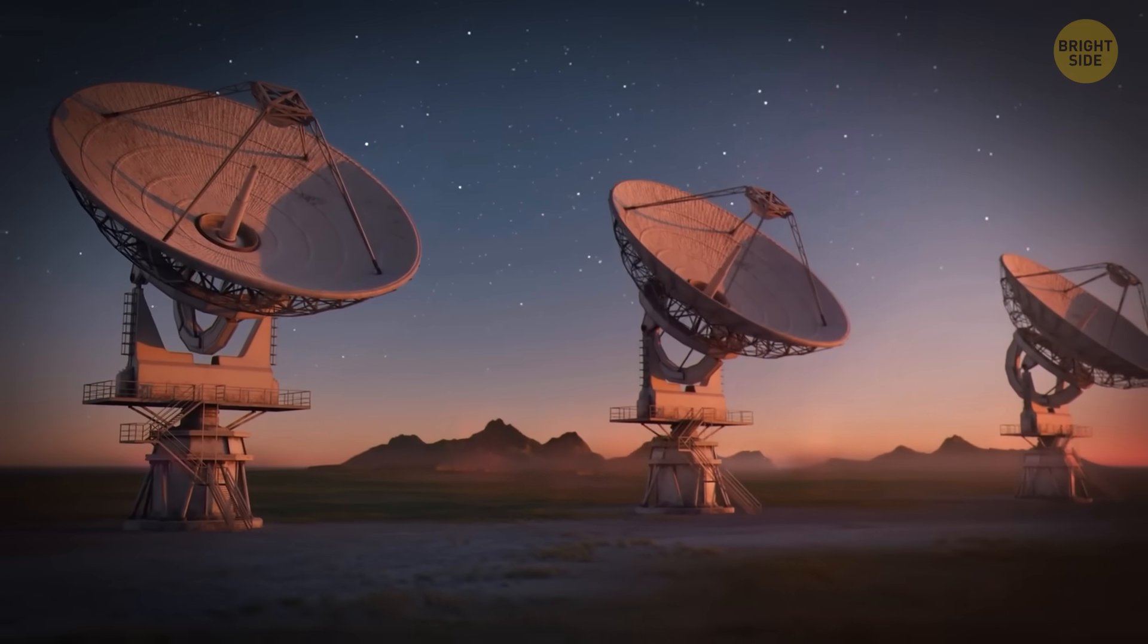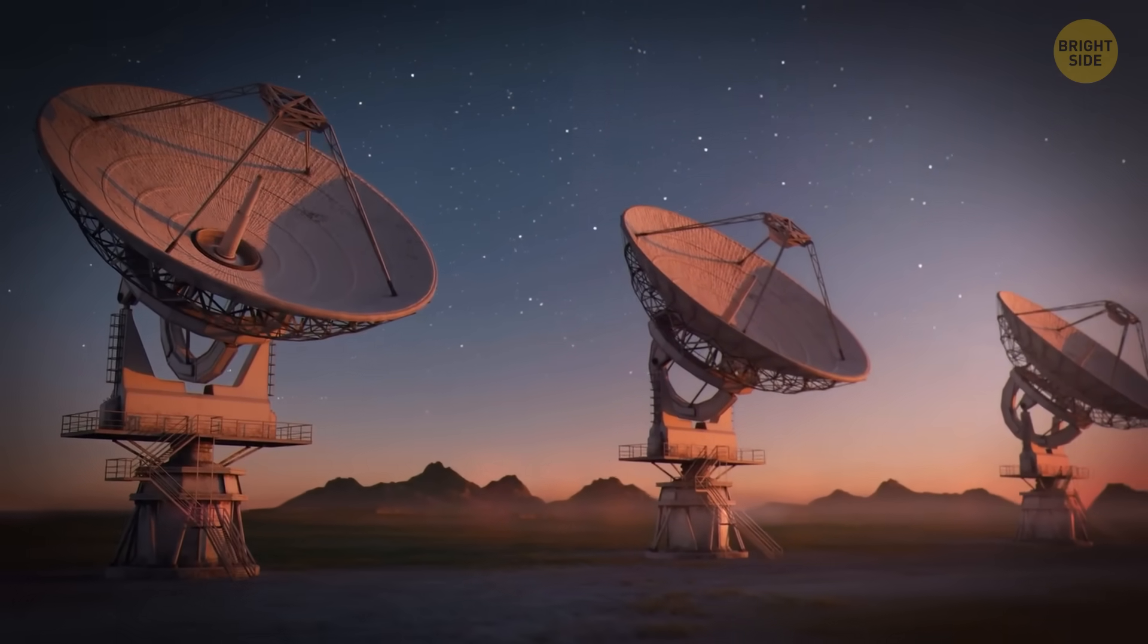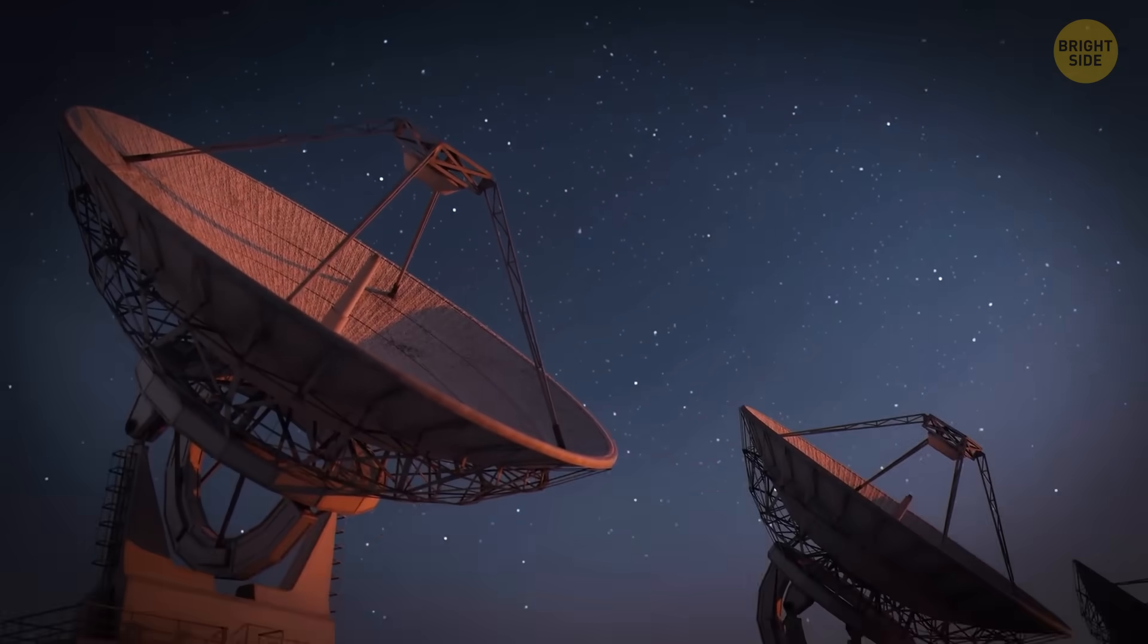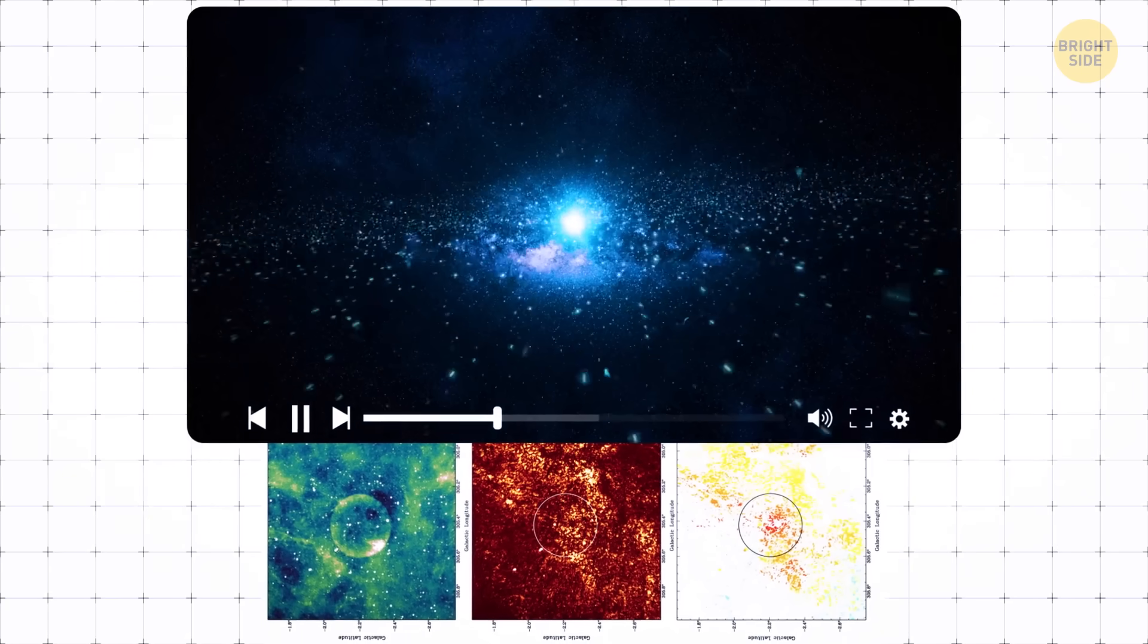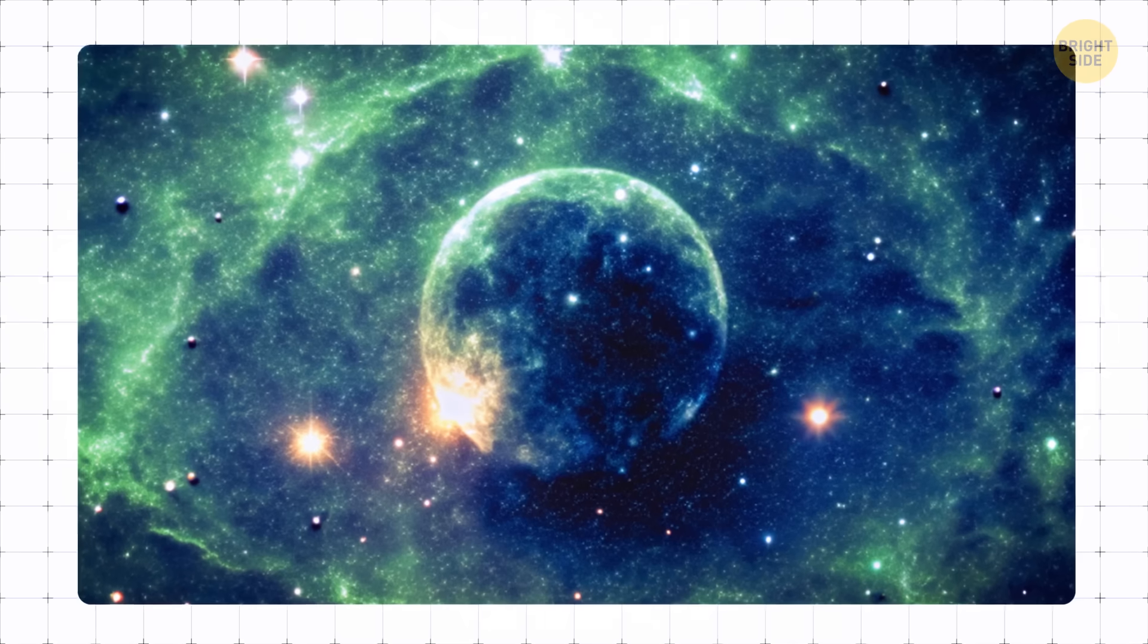Astronomers were going through data from a super-powerful radio telescope when they spotted something that looked like a perfect round bubble. At first, they thought it was the leftovers from a massive star explosion called a supernova.